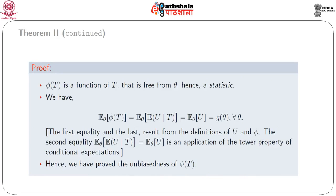We consider a proof of this theorem. Since φ(T) is a function of T that is free from θ, φ(T) is a statistic. Now E[φ(T)] = E[E(u | T)] = E(u) by the tower property of conditional expectations. Hence E[φ(T)] = E(u) = g(θ) for all θ, and therefore φ(T) is an unbiased estimator of g(θ).